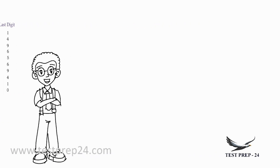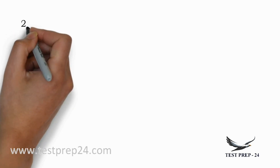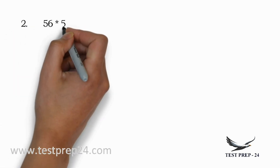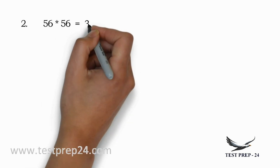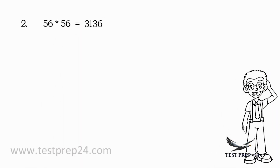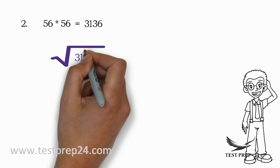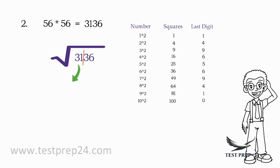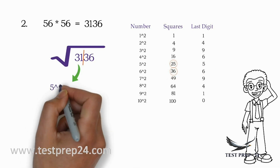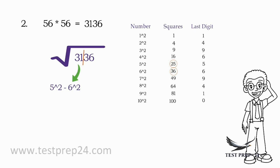Let's use the same technique on another question. What is the square root of 3136? 56 × 56 = 3136. Drawing a line after two digits gives 31 as the first part and 36 as the second part. 31 lies between 5 square and 6 square, so the first digit of the answer is 5.